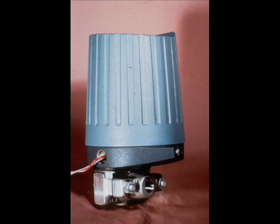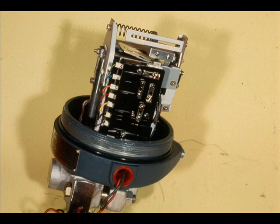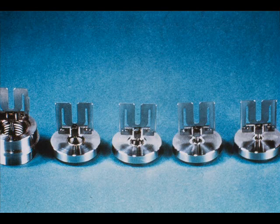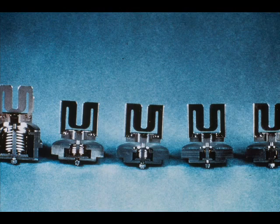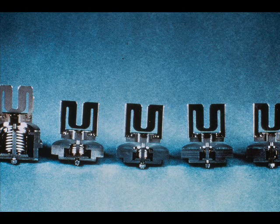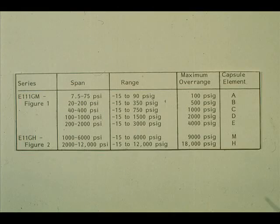The Foxborough E11 series are force balance type electronic gauge pressure transmitters. The top works and principle of operation are identical to the E13 for differential pressure. The basic difference is in the measuring element. This is a cutaway view of the measuring capsules.